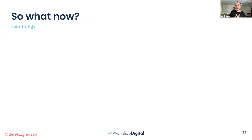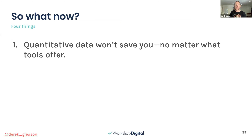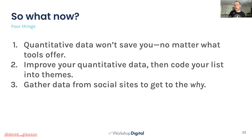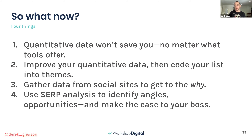To summarize the takeaways: first, quantitative data alone — give it up. It's not getting you there and never will, even if it makes content better, it won't differentiate. Second, you can improve your quantitative data to create a unique baseline for coding themes and mapping topics. Third, gather data from social sites like Hacker News, Reddit, or Twitter to get the 'why' data instead of creating narratives from page titles alone. And lastly, use SERP analysis to identify angles and opportunities — especially when you need to be persuasive with a boss, it gives you something visual to walk through and make your case.